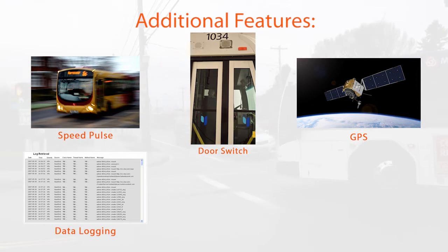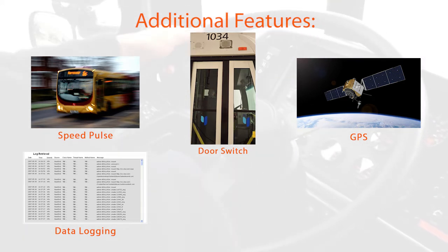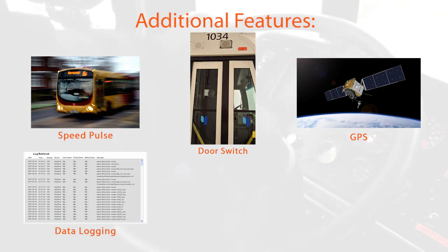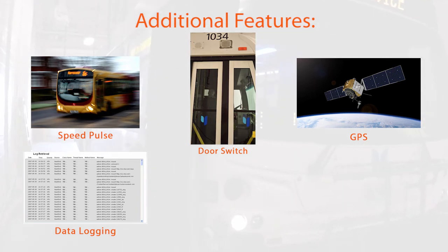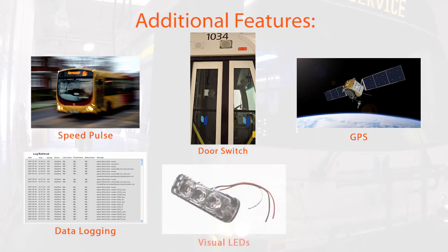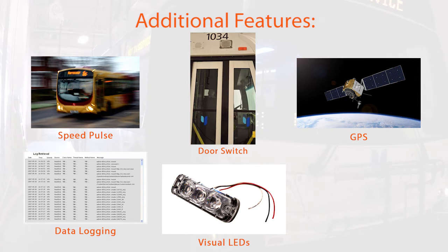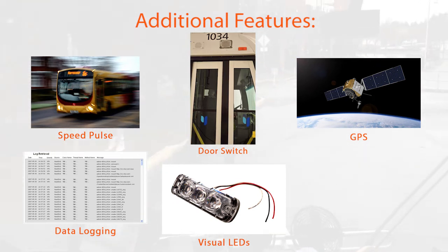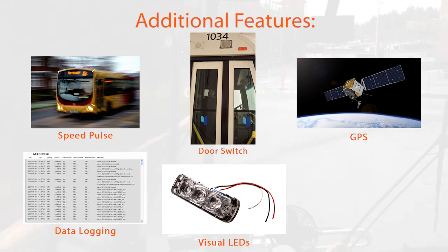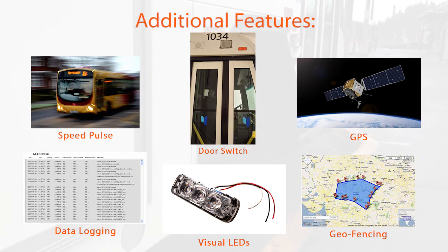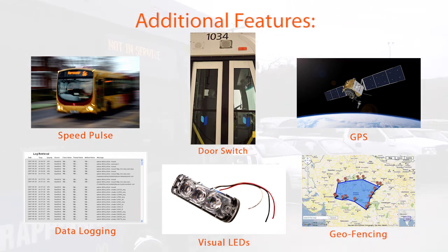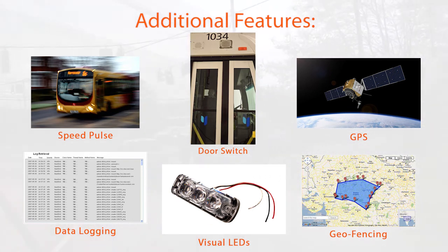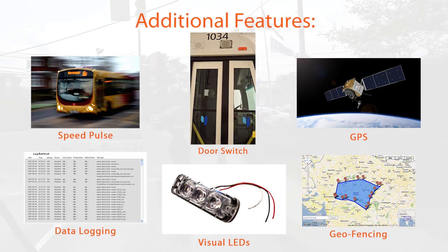Data logging is used to record and store information that can be easily removed for review of activations of the system via a micro SD card installed on the front of the ECU. Visual alert LEDs can be mounted at the front and/or sides of the bus, triggered by the system when the bus is making a turn. Geo-fencing can be added to deactivate or lower the volume of the system when in a certain area, such as the bus yard, bus shop, or heavy residential areas.